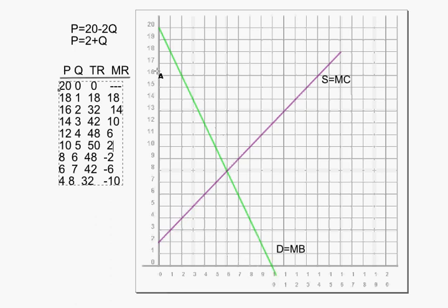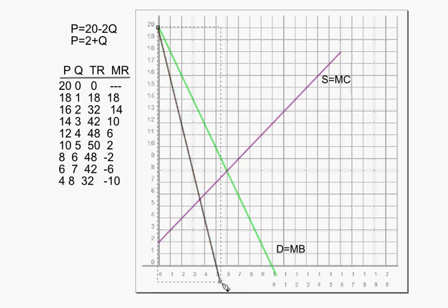So here's what you do to graph marginal revenue. All you got to do is start at the same place the demand curve starts and go down twice as fast. And if the line goes down twice as fast, instead of intersecting the x-axis at ten here, it's going to intersect twice as fast at five. And so now you know how to draw a marginal revenue curve. It's just that easy.